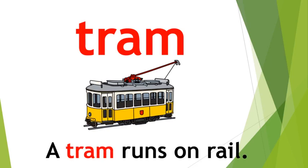You can see two lines under tram — they are the rails. Let us move on to the next word.